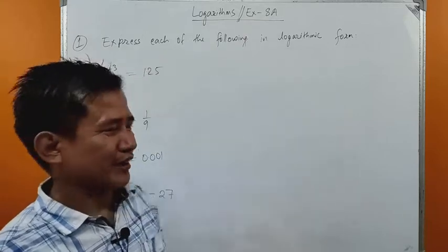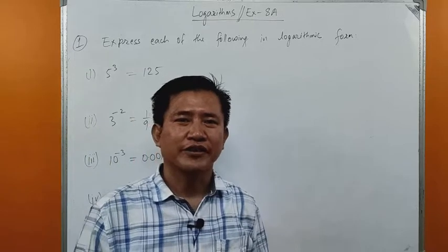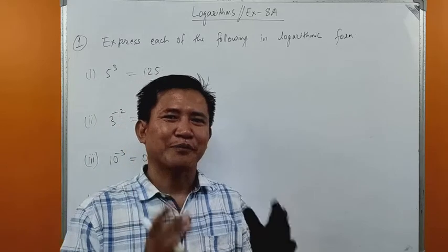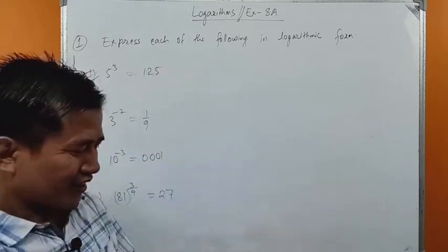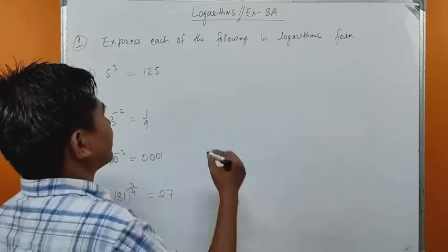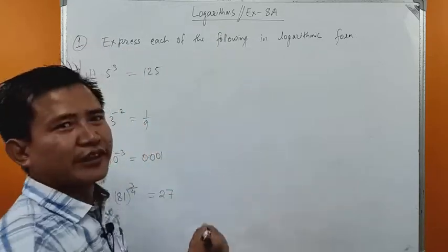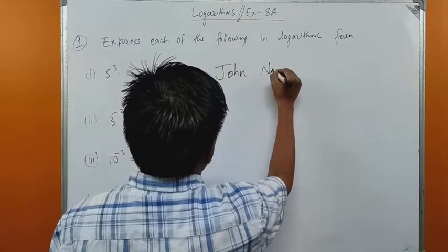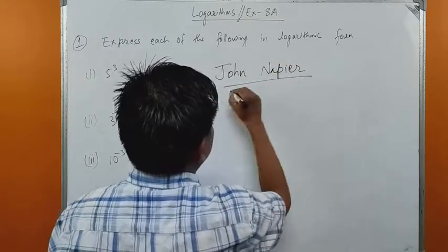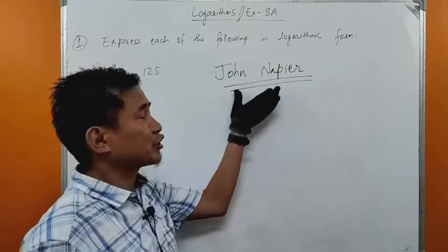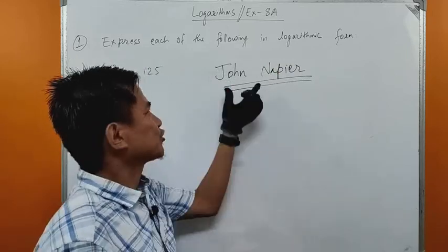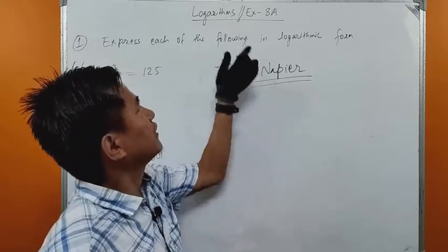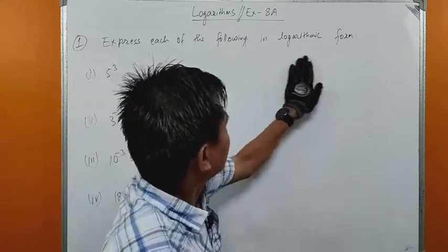Before we proceed to solving the questions from this chapter, let us first understand some basics of logarithms and the person who invented it. Logarithm was invented by a very famous scientist from Scotland — a Scottish scientist — and the name of that scientist is John Napier. It is good to know the name of the inventor.